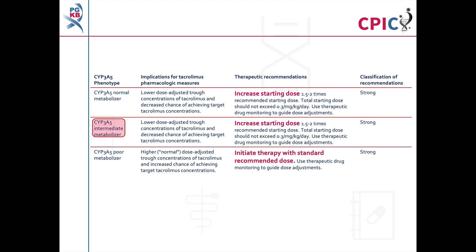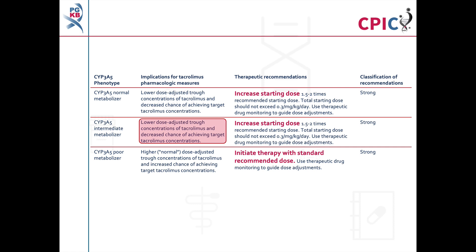Patients with a CYP3A5 intermediate metabolizer phenotype will have a decreased chance of reaching target tacrolimus concentrations with standard dosing. These patients should be given an increased starting dose of tacrolimus. This is a strong recommendation.